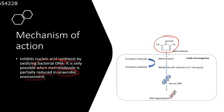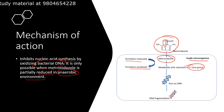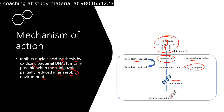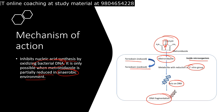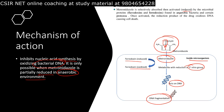Metronidazole moves inside a microorganism where it is reduced by ferredoxin. Ferredoxin oxidizes itself and reduces metronidazole at the 5-prime nitro group. This reduction of the 5-prime nitro group activates metronidazole, which then acts on the DNA and causes DNA fragmentation — that is the core mechanism of action.